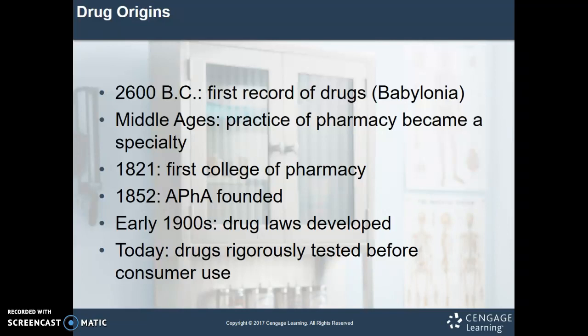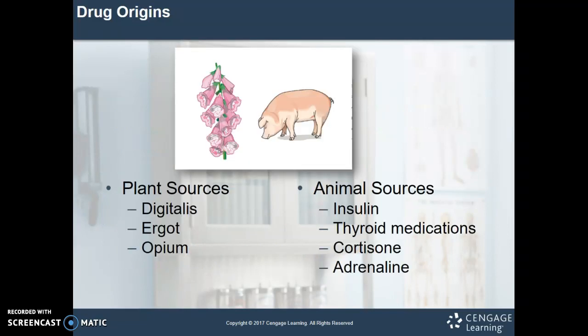In 1821 the first school of pharmacy was founded, and APHA — the American Pharmaceutical Association — was founded in 1852. In the early years, drugs didn't have any standards; there was nobody regulating them and a lot of wrongdoing — people selling things they claimed would work. Drugs didn't have to meet specific standards before being introduced to the public, so they weren't considered safe and effective. In the early 1900s we started to see drug laws developed, and today a drug must go through rigorous testing and approval before being introduced to consumers.